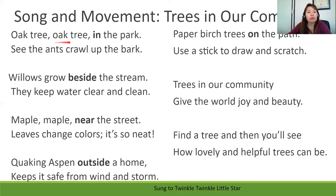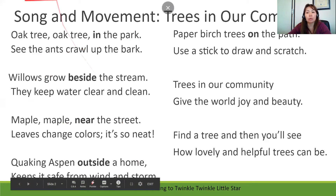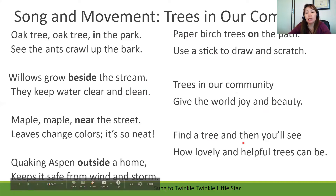Oak tree, oak tree in the park, see the ants crawl up the bark. Willows grow beside the stream, they keep water clear and clean. Maple, maple near the street, leaves change colors, it is so neat. Quaking aspen outside a home keeps it safe from wind and storm. Paper birch trees on the path, use a stick to draw and scratch. Trees in our community give the world joy and beauty.